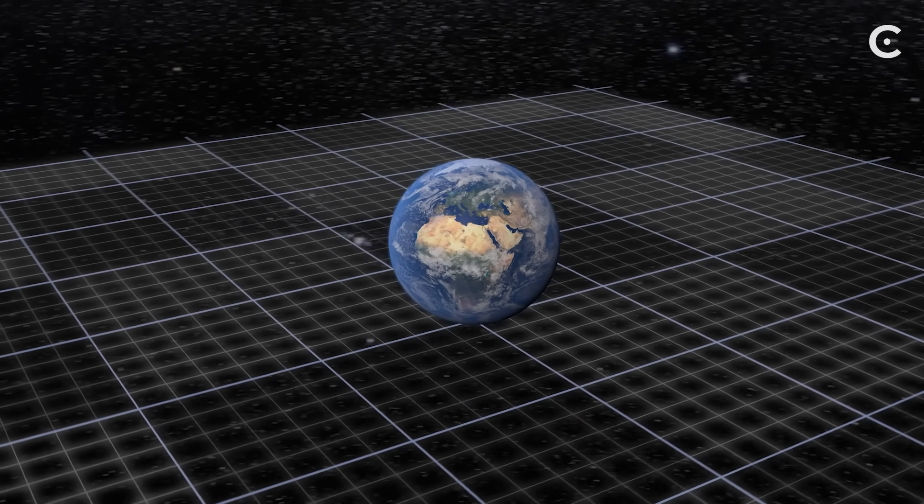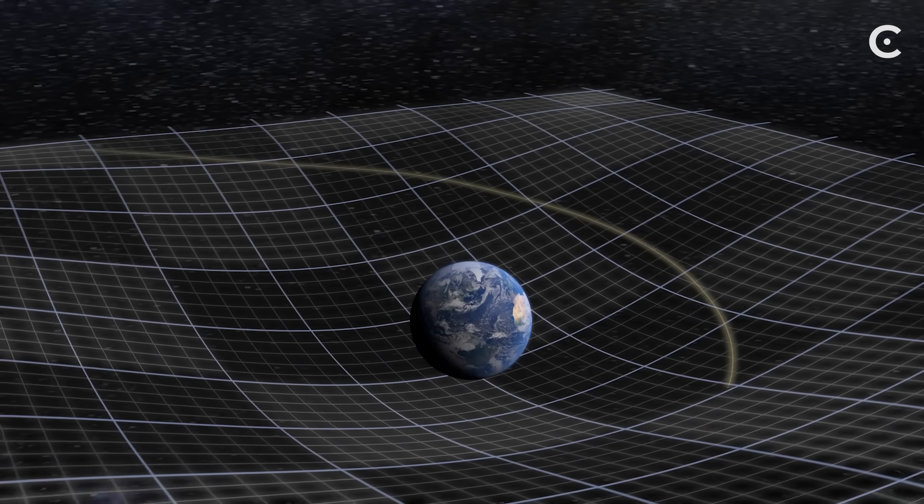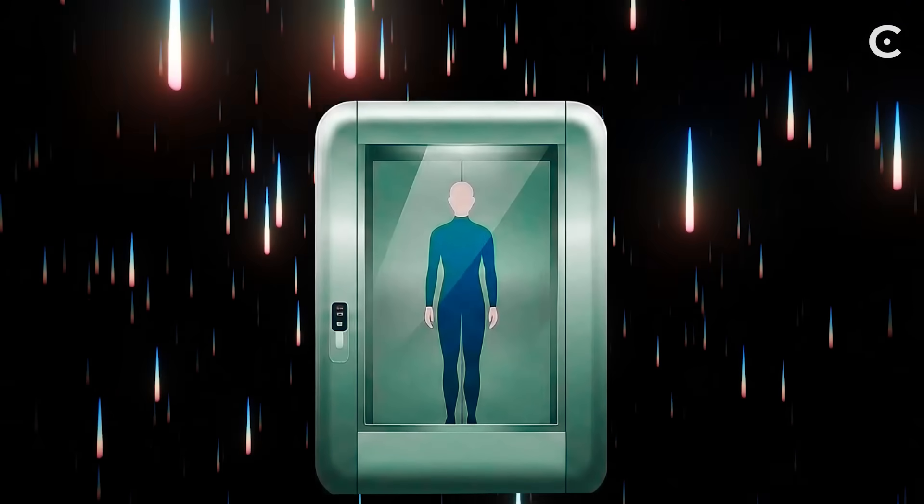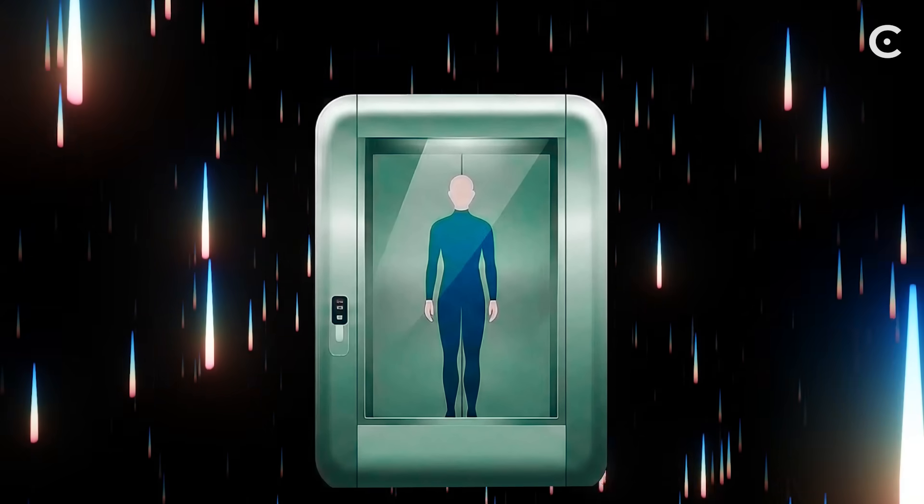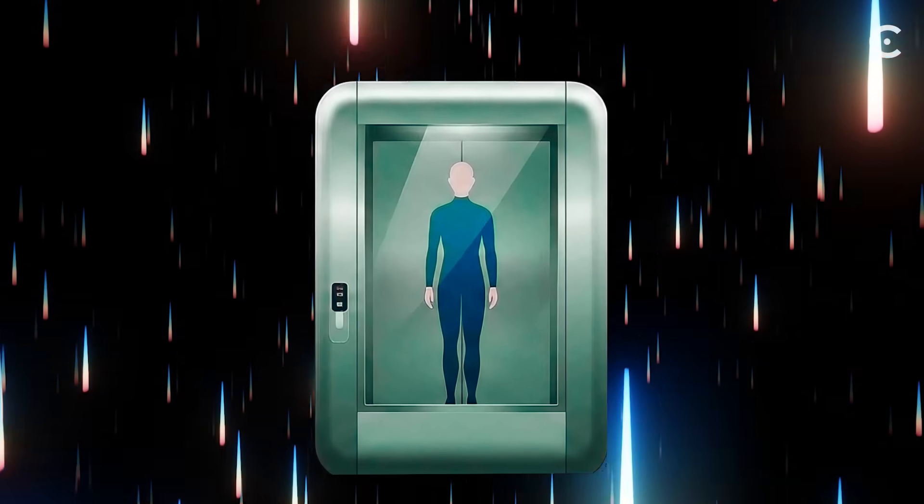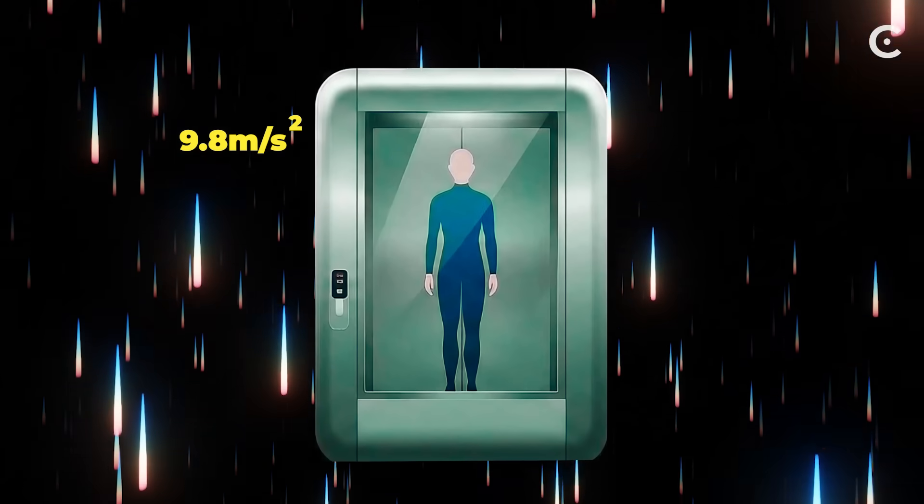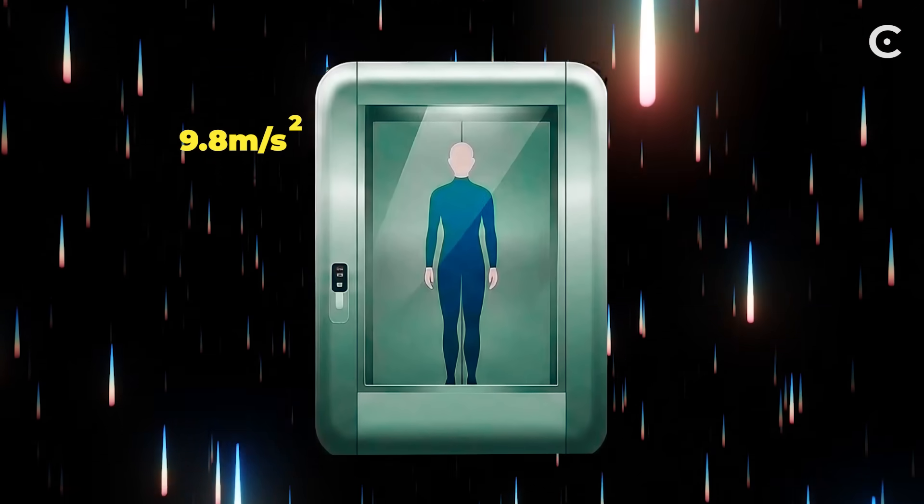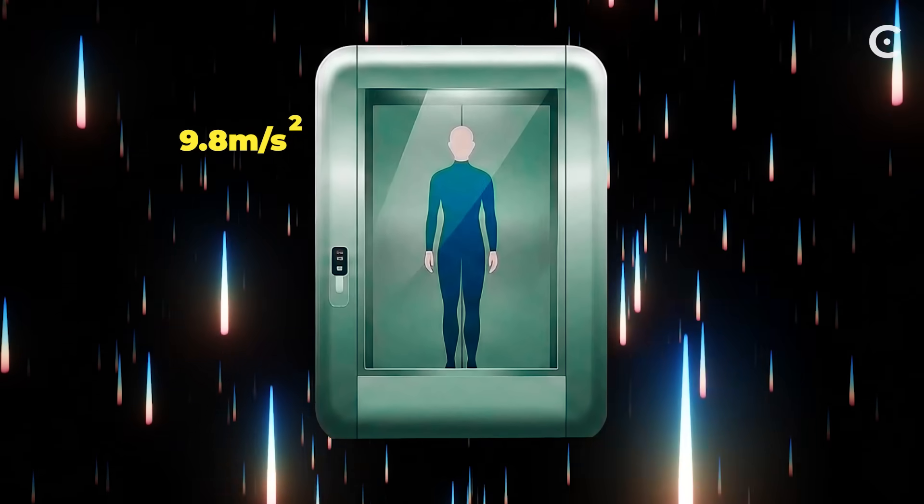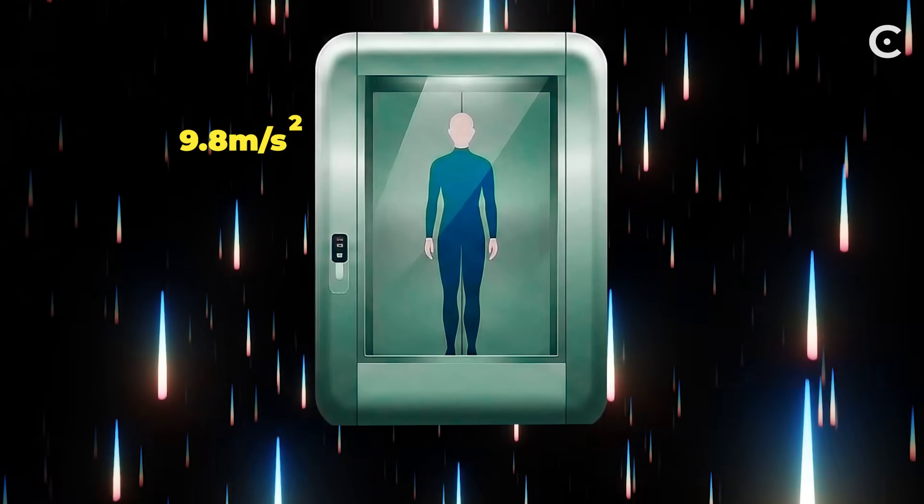Einstein's breakthrough came from a simple question. What if gravity isn't a force at all? What if it's geometry? Picture this thought experiment. You're in an elevator in deep space with no windows. Someone accelerates the elevator upward at exactly 9.8 meters per second squared. You'd feel pressed against the floor with exactly the same sensation as standing on Earth. Einstein realized there's no way to tell the difference between acceleration and gravity from inside that elevator.